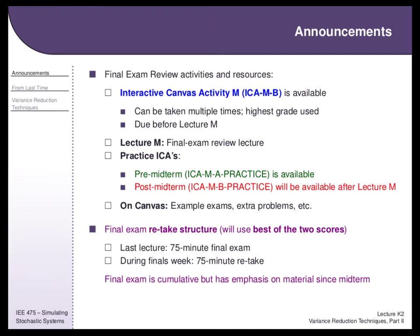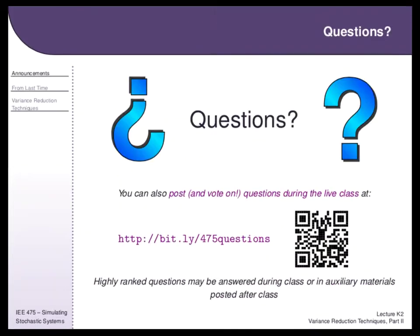Both exams are 75 minutes. The content will be slightly different but the difficulty is designed to be similar — the same procedure I used when making the midterm. The final is comprehensive, but because it's 75 minutes, it will be more biased toward post-midterm content. I will integrate some early material: know what a model is, know about hand simulation, know how to generate random numbers. You might have to generate a random number using a pre-midterm technique and then use it with the techniques we've covered this week.